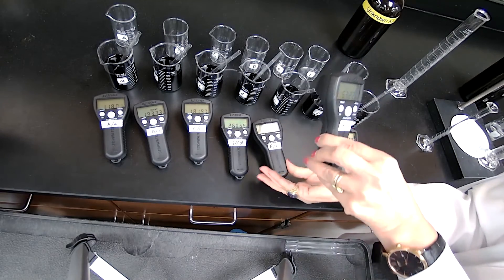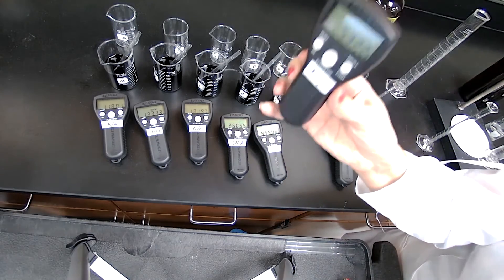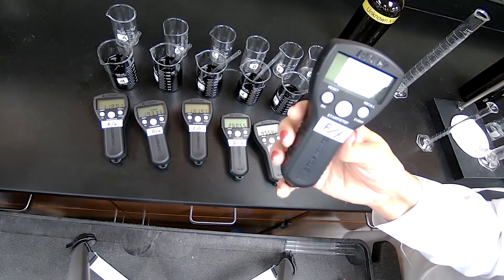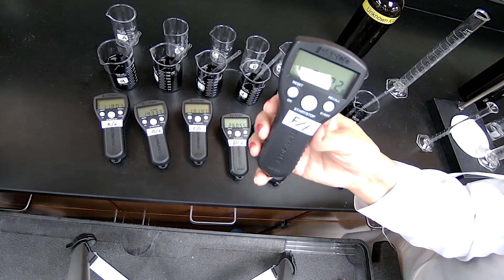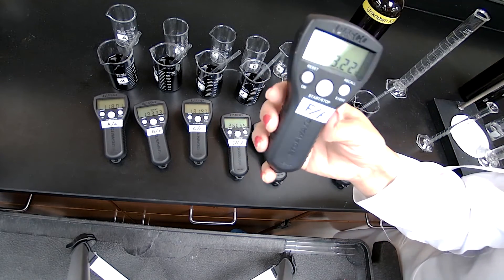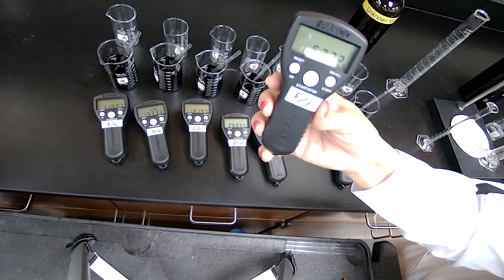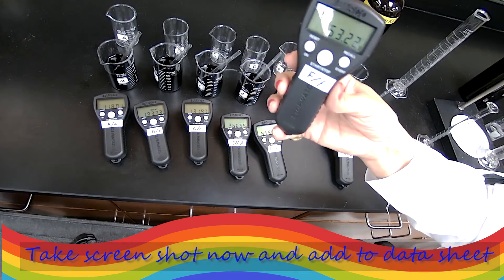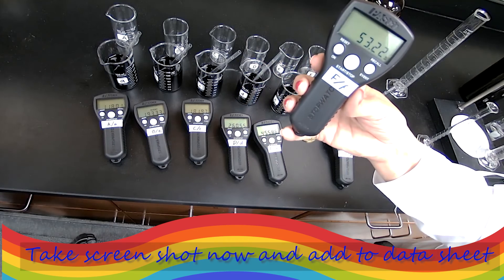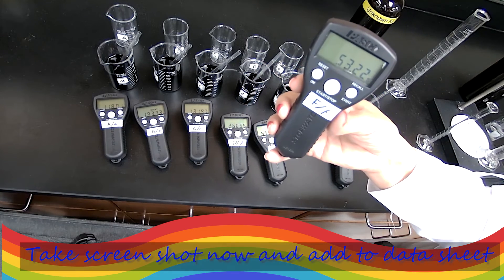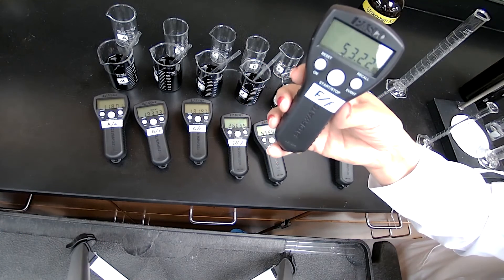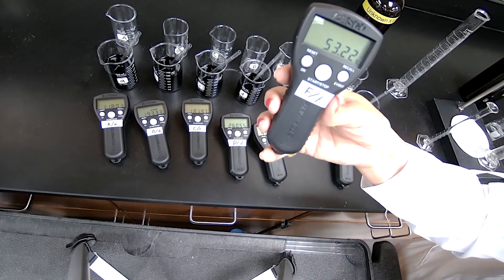For letter F, is 53. This is the one that I added 16 milliliters of the sulfurous acid—53 seconds. This took place very fast because it has the highest volume of the sulfurous acid, and that is 53, correction, 53.22 seconds.